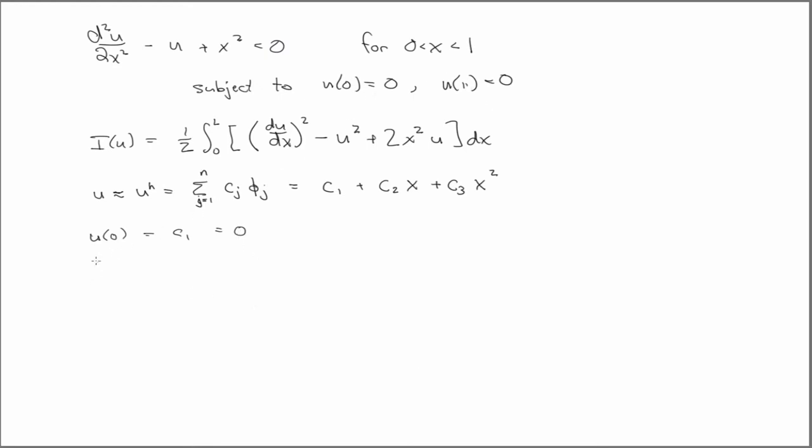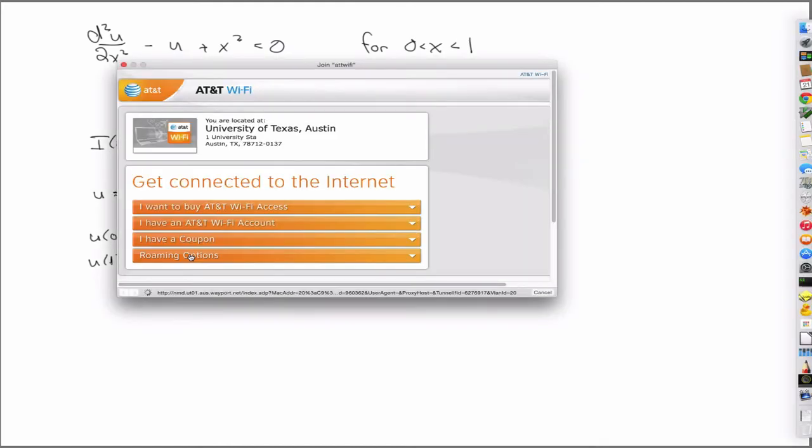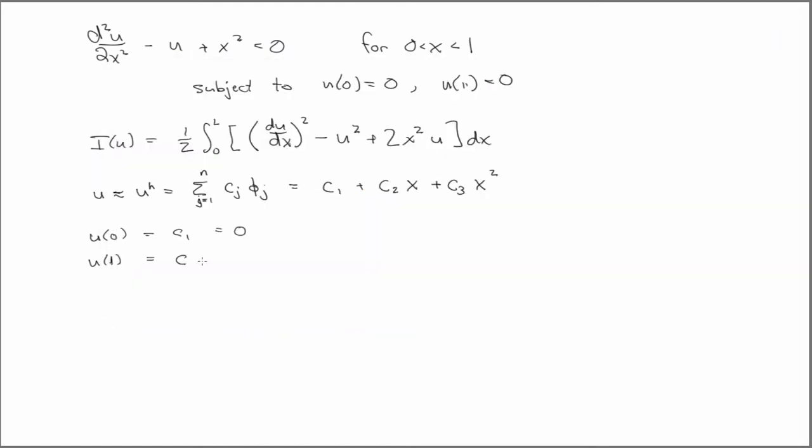It has to satisfy the other boundary condition, which is U at 1 is also equal to 0. So if you plug in U1 and the fact that C1 equals 0, then all you have left is C2 plus C3 equals 0. And of course, that implies that C2 is equal to minus C3.